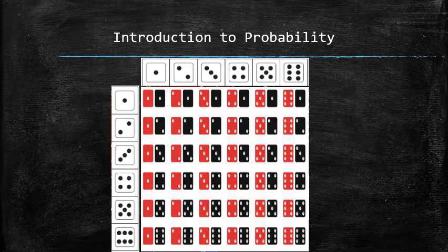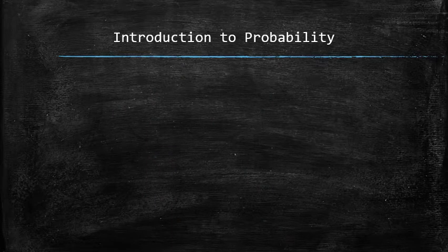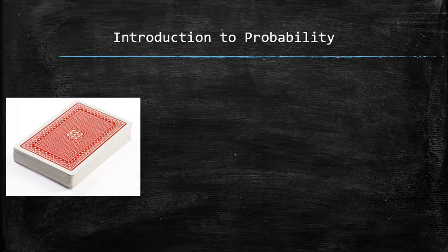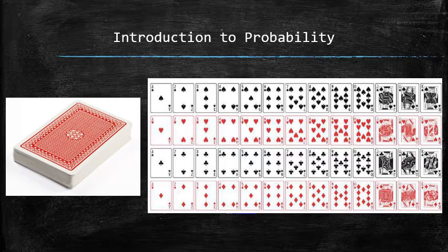There is not enough space here to list all 216 possible outcomes for rolling three dice, but we can easily imagine what each outcome looks like. When drawing a card from a standard 52 card deck, there are 52 possible outcomes, one for each distinct card in the deck. This is the sample space for drawing a card from a standard deck.